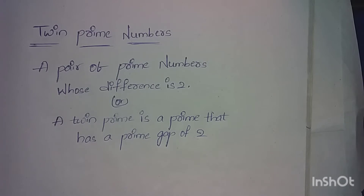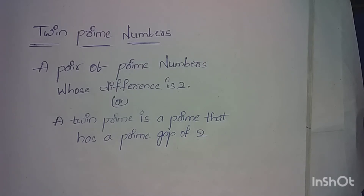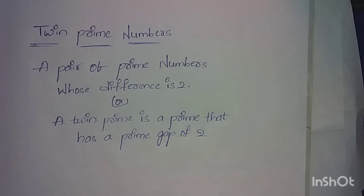A pair of prime numbers whose difference is 2 is called twin primes. A twin prime is a prime that has a prime gap of 2. The twin prime pair has two numbers, and the difference between the two numbers is 2.